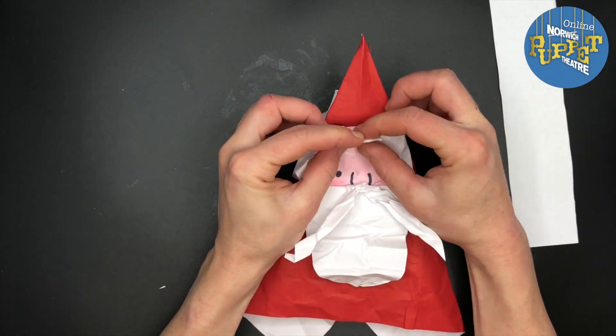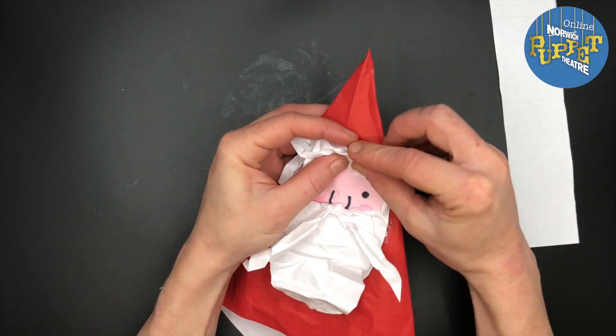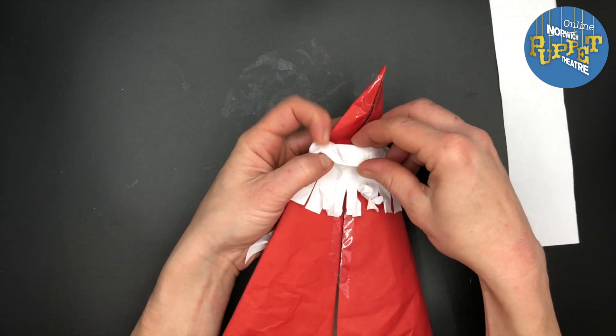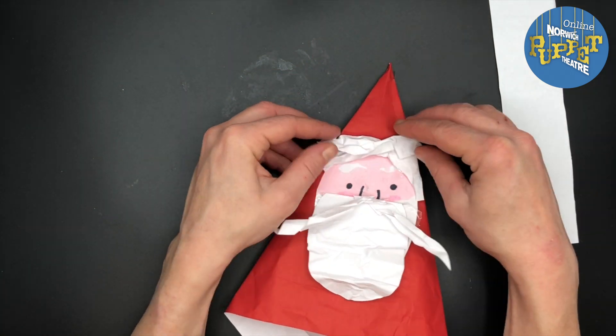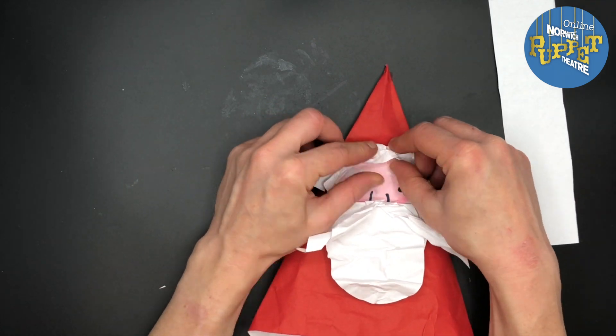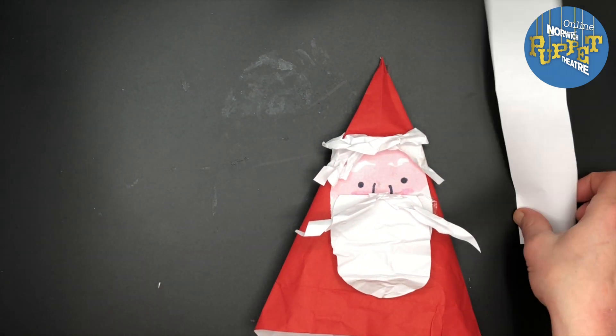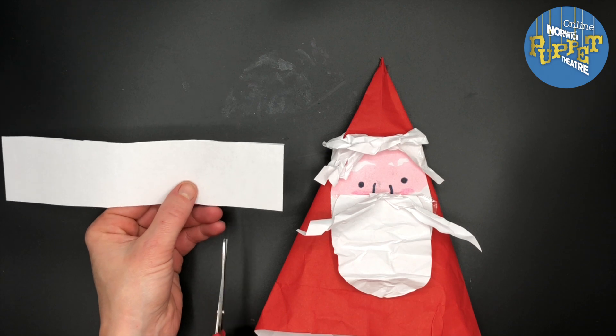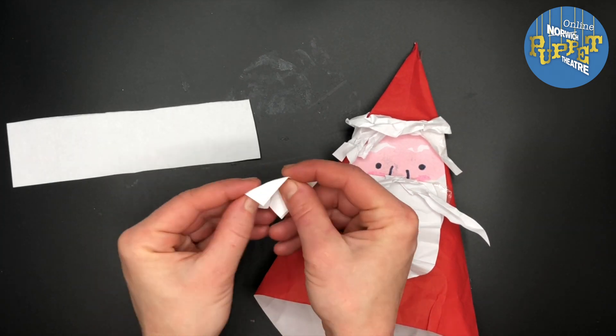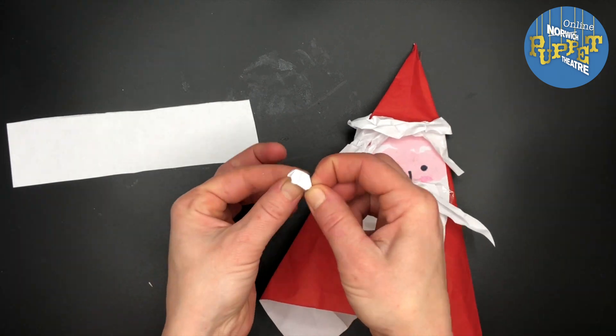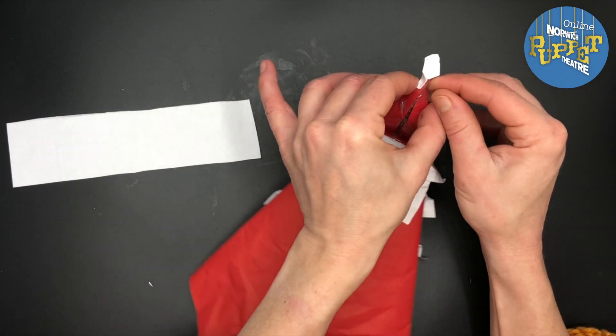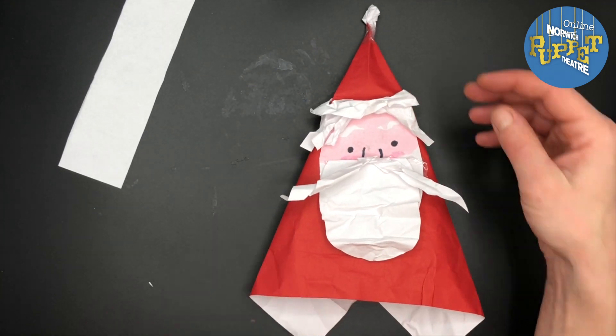Fold down the top bit of your strip of paper to make the trim on Santa's hat and give it a little squish and a pinch until you've got exactly the right position that you're happy with. Now for the bobble. Take the bit of paper that was left over from your moustache earlier, cut off a bit, twist it and scrunch it into a ball, then tape this to the top of Santa's hat.